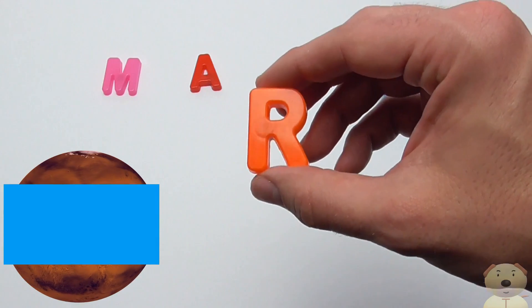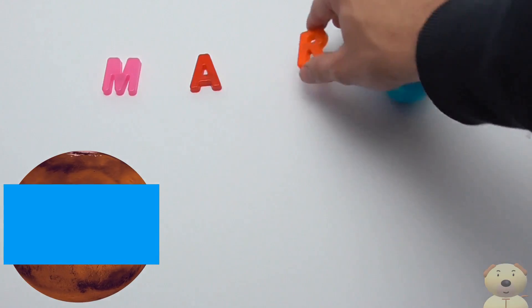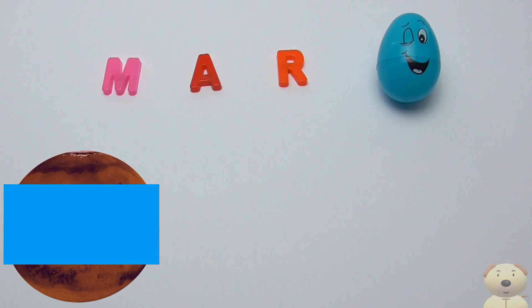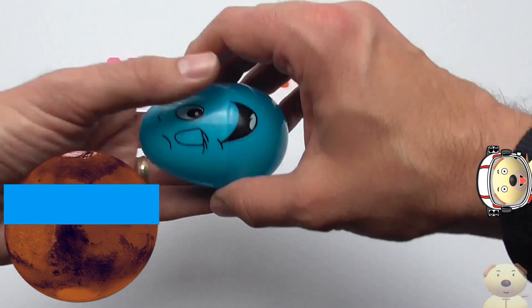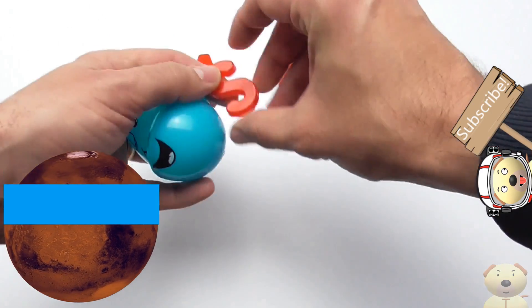R is for Red. It's called the Red Planet because iron oxide is in its rocks and soil. I think I know which object in space this is. Do you?